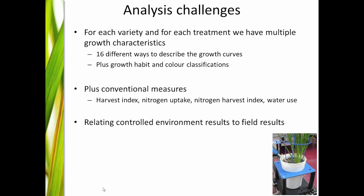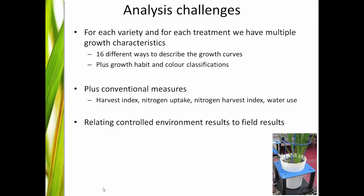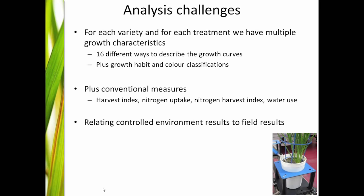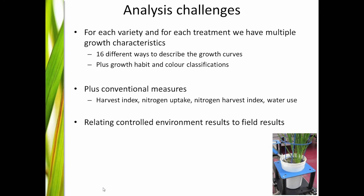We've got various ways of describing shoot architecture, and we've got colour classifications so we can pick up when the plant is removing nitrogen from old leaves and putting it into young leaves. Then there are all the conventional measures — harvest index, nitrogen uptake, water use. So we've got so much data, and it's just making sense of it. When we first discussed this with statisticians, they just laughed at us. But we collaborate with the Australian Centre for Visual Technologies for our image analysis work, using machine learning, and they're keen that they can make something of our results that conventional statistics just won't do.